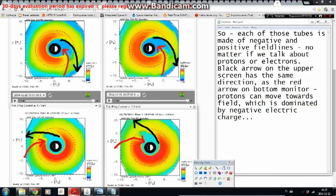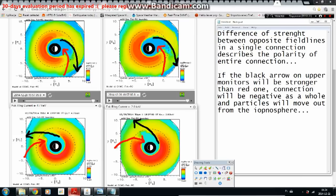So, each of those tubes is made of negative and positive field lines, no matter if we talk about protons or electrons. Black arrow on the upper screen has the same direction as the red arrow on bottom monitor. Protons can move towards field which is dominated by negative electric charge. Difference of strength between opposite field lines in a single connection describes the polarity of entire connection. If the black arrow on upper monitors will be stronger than the red one, connection will be negative as a whole and particles will move out of the ionosphere.